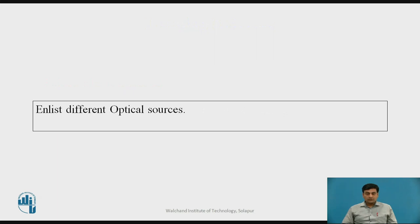Pause the video here and enlist the different optical sources. The 3 main Optical Light Sources available are: 1. Wideband Continuous Spectra Sources, i.e. Incandescent Lamp; 2. Monochromatic Incoherent Source, i.e. LED (Light Emitting Diodes); 3. Monochromatic Coherent Sources, i.e. Laser. In this lecture, we are going to concentrate on the basic concept of the third optical source, i.e. Laser.